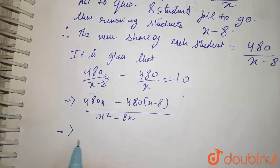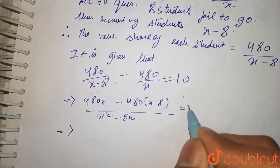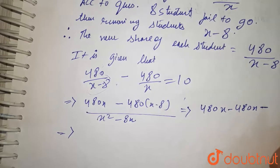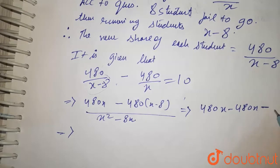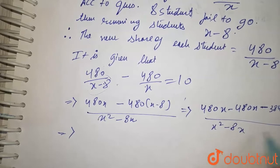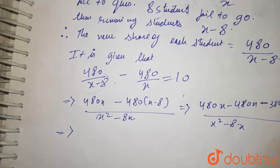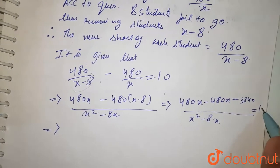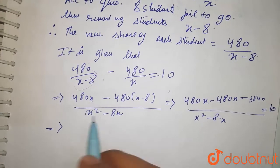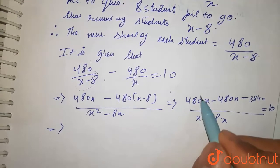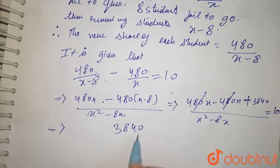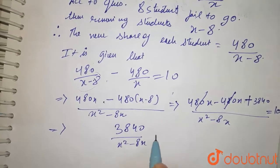Solving this, this becomes 480X minus 480X minus 3840, upon X squared minus 8X, which is equal to 10. So, 3840 upon X squared minus 8X equals 10.